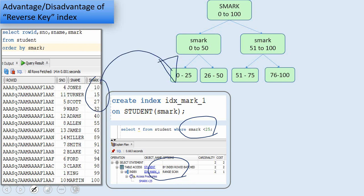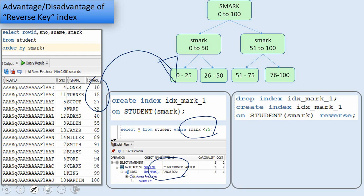But the moment we create a reverse key index, this information is no more sorted. It will not be stored in the same position; 51 will be stored differently. Same way 27 will be stored in the position of 72. So it is not sorted.